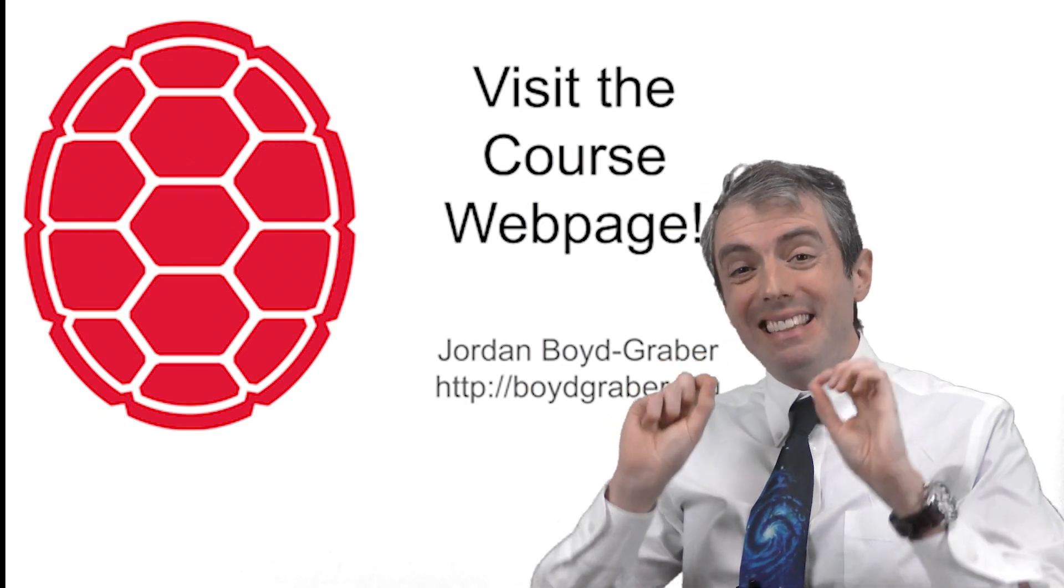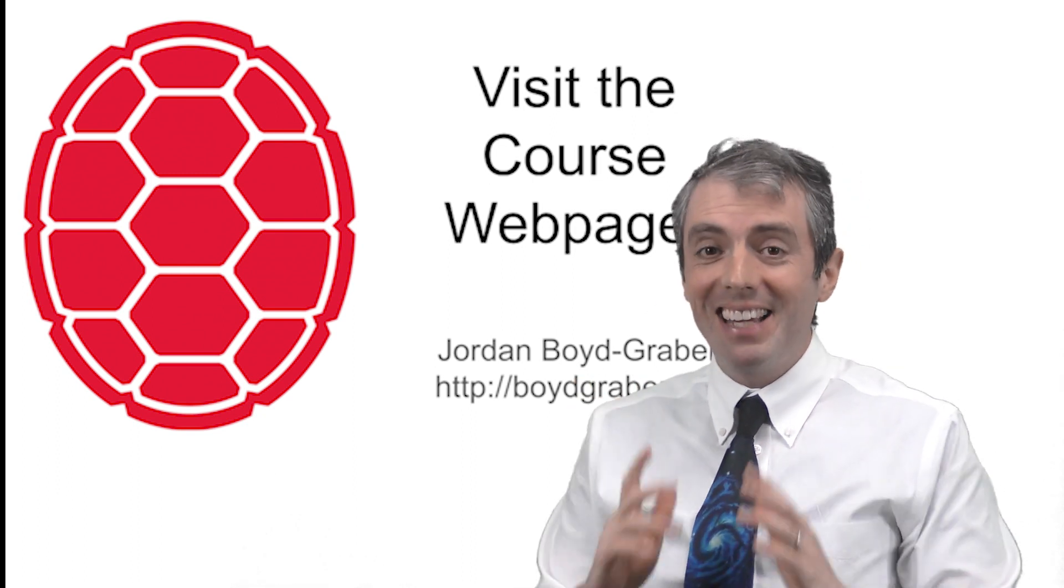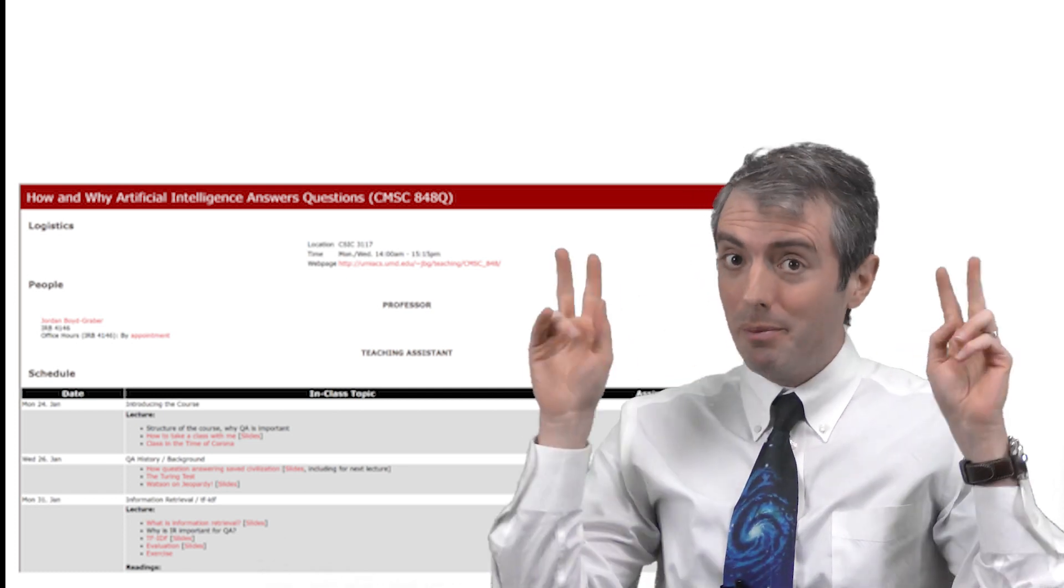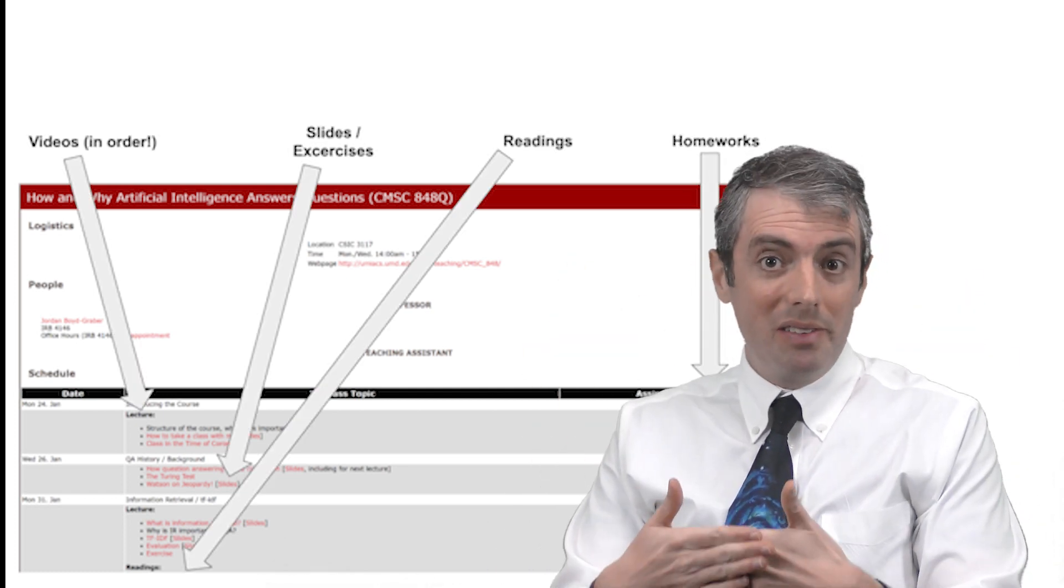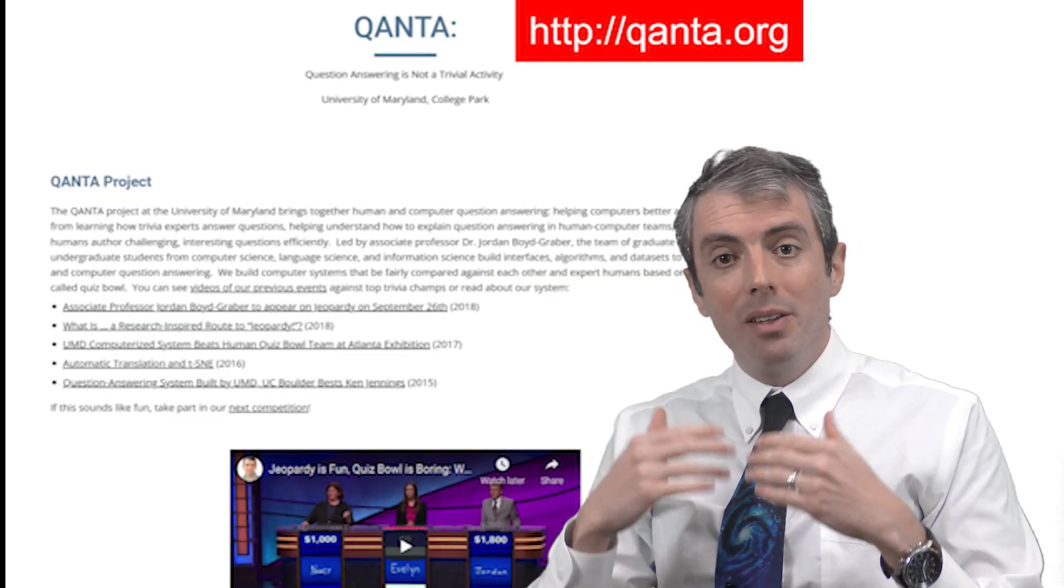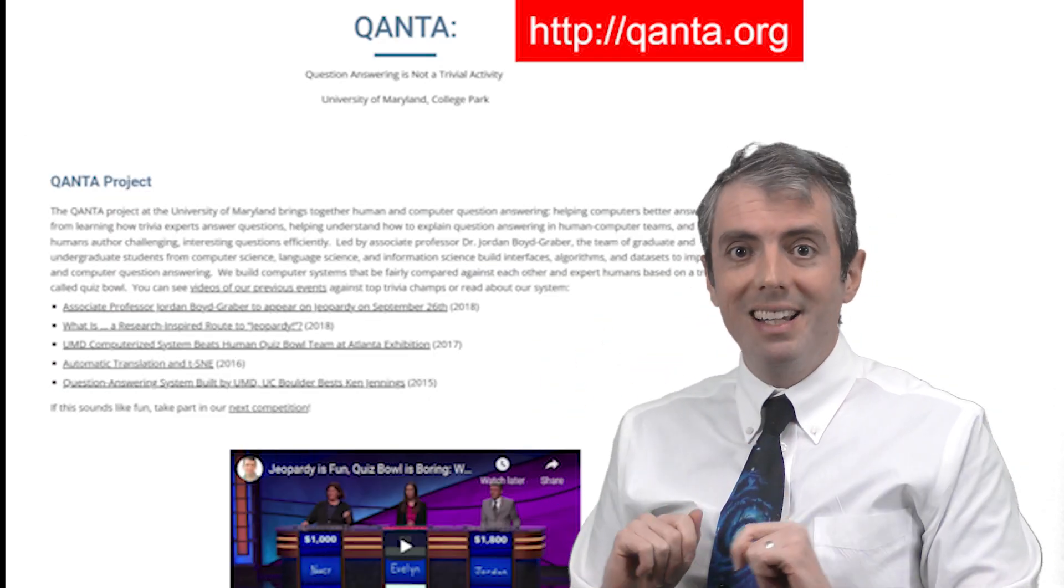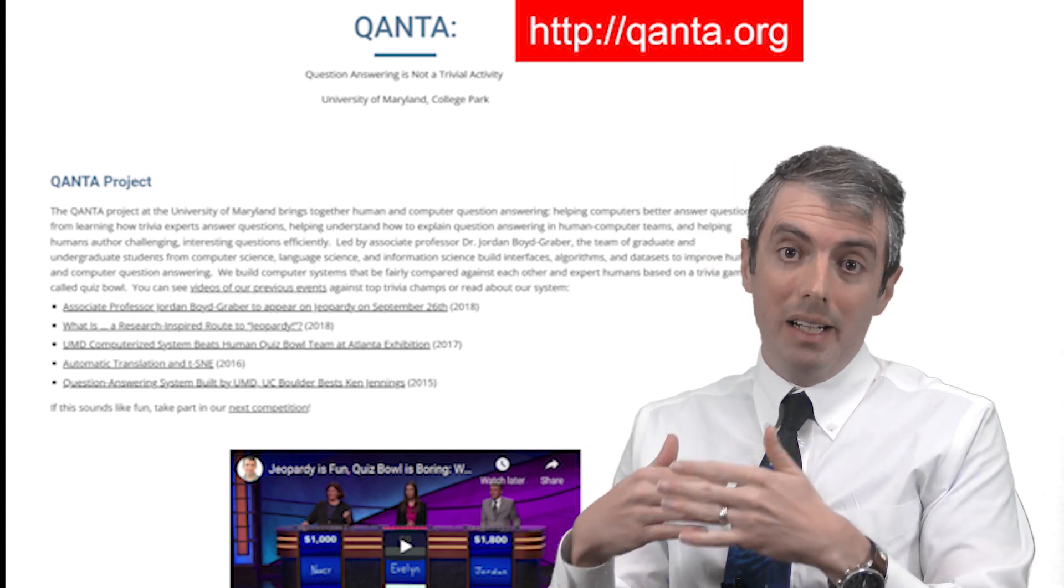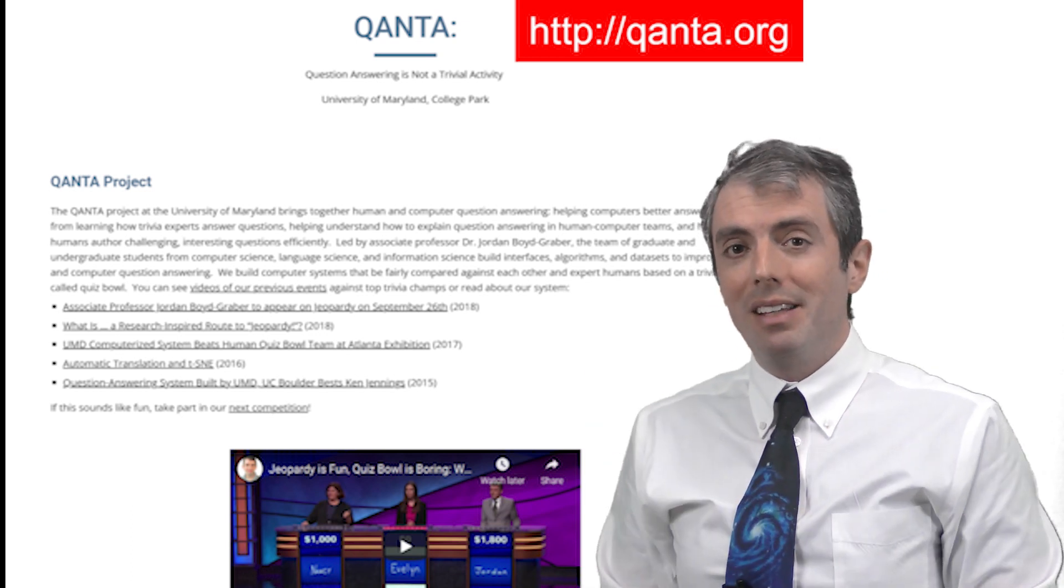Now that we've gone over what item response theory is, we'll next talk about how it can be useful for better understanding your data and knowing whether your system is actually good or not. This is just a single lecture from a course. YouTube likes to show you these videos out of order, but if you go to the course webpage linked below, you can see the lectures in the right order and get resources like homeworks or suggested reading. You can also visit quanta.org if you want to learn about our systems for creating computers that can answer questions, where quanta stands for question answering is not a trivial activity. If you want to help the channel, provide a big gradient to the algorithm by liking and subscribing.